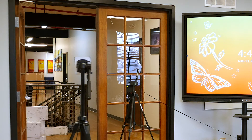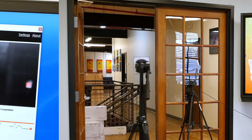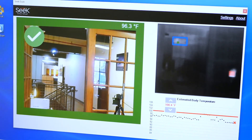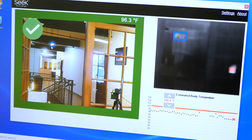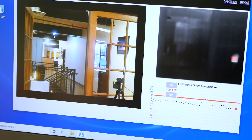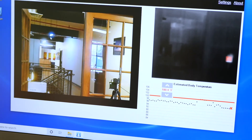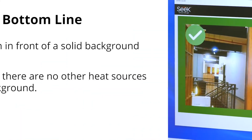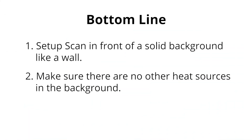In this example, we set up SeekScan in front of an open doorway. The main problem is the lack of a solid background. Additionally, there are some hot ceiling lights in the background. The camera gets very confused by these and sometimes even tries to scan them instead of the subject. Bottom line, set up SeekScan in front of a solid background like a wall, and make sure there are no other heat sources in the background.